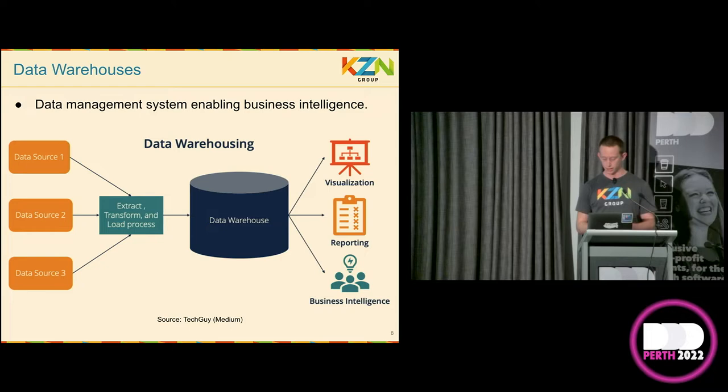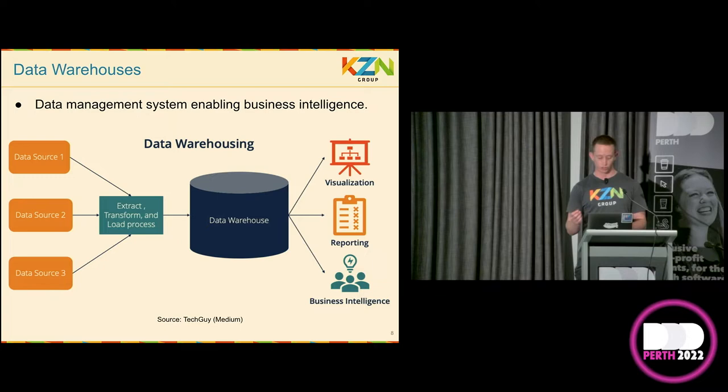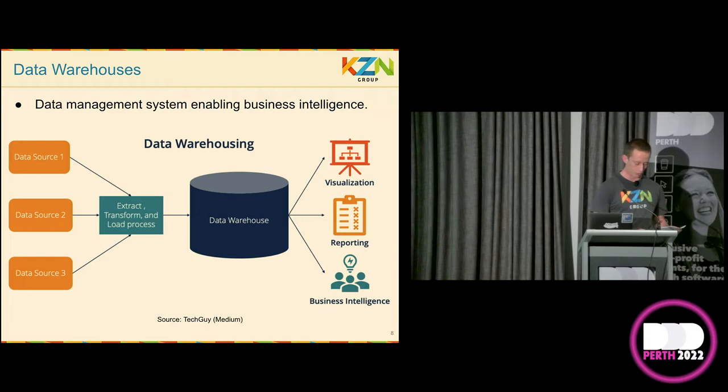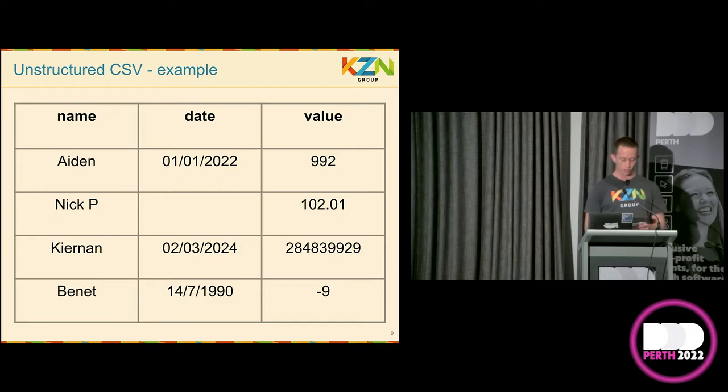The important thing to understand about data warehouses is that they store data in databases, and databases only accept structured data. Hence, a data warehouse can only store structured data. But what is structured data? Data can be structured or unstructured, and this is one of the keys to understanding data lakes and the role they play in superseding data warehouses in the race to accommodate vast quantities of data. Let's start by looking at one of the most common types of unstructured data — a CSV.